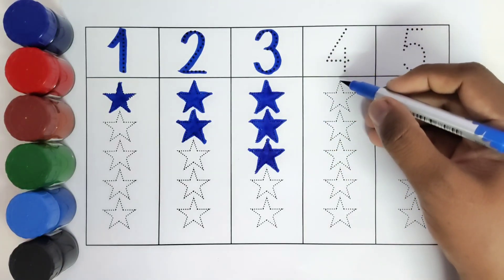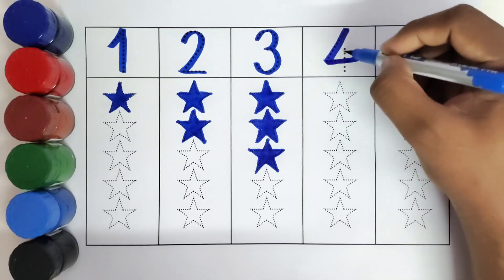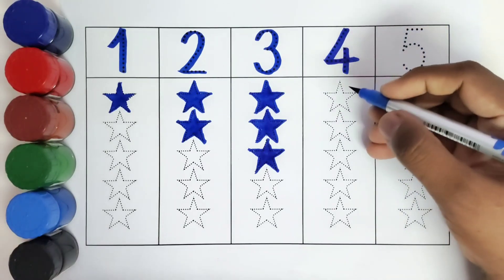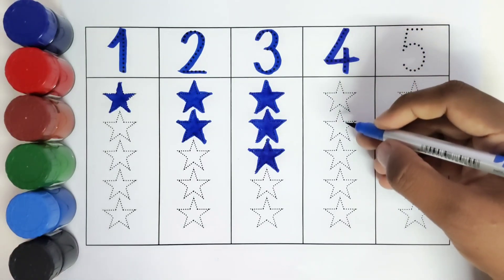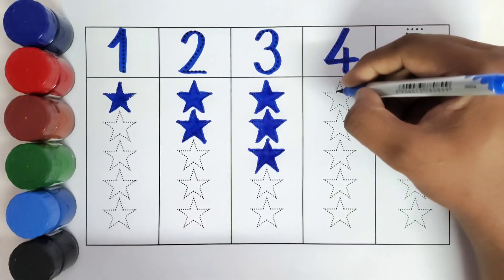This is 4. Number 4. How many stars do we have to color? 1, 2, 3, 4.